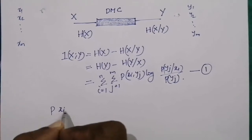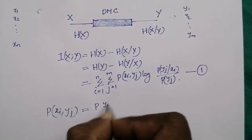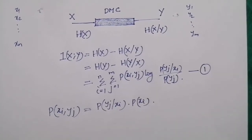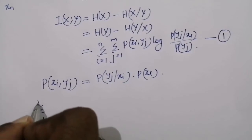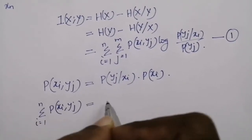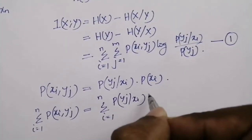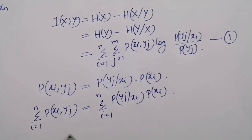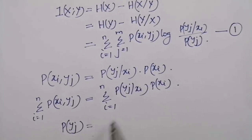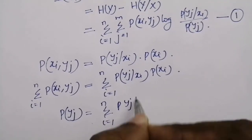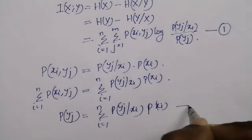We know that p(xi, yj) can be written as p(yj|xi) times p(xi). Summing both sides: sigma i=1 to n of p(xi, yj) equals sigma i=1 to n of p(yj|xi) times p(xi). This gives p(yj) equal to sigma i=1 to n of p(yj|xi) times p(xi). This is equation number 2.